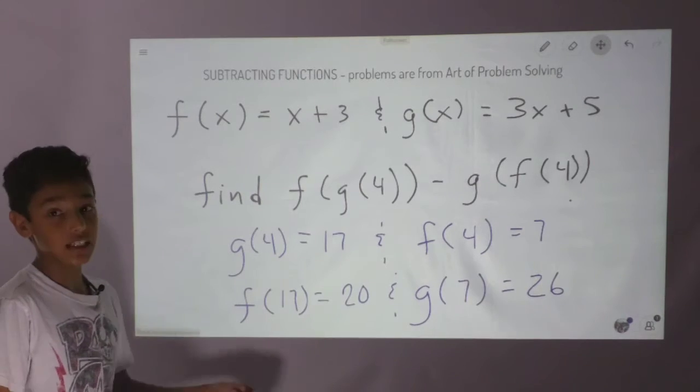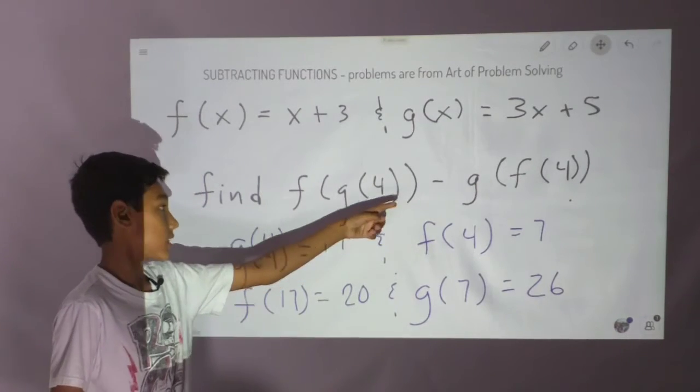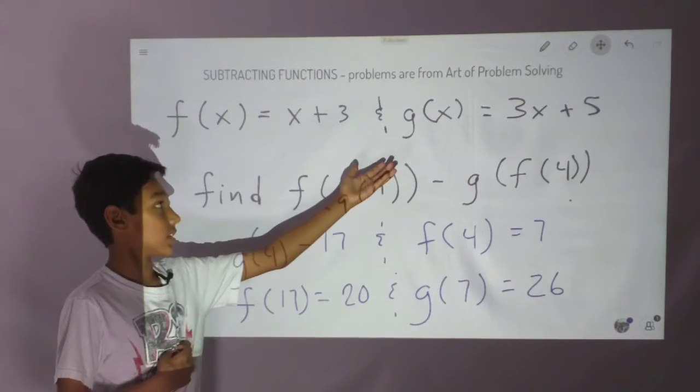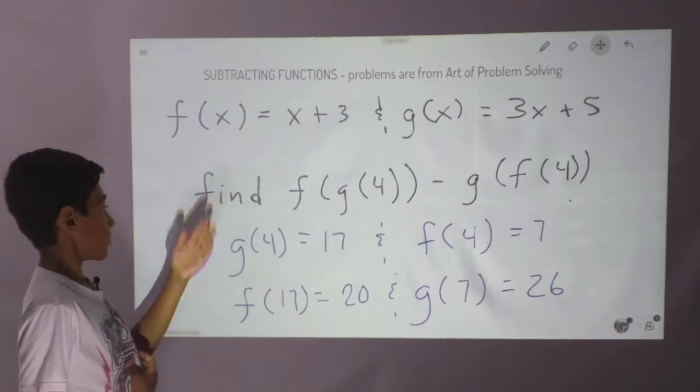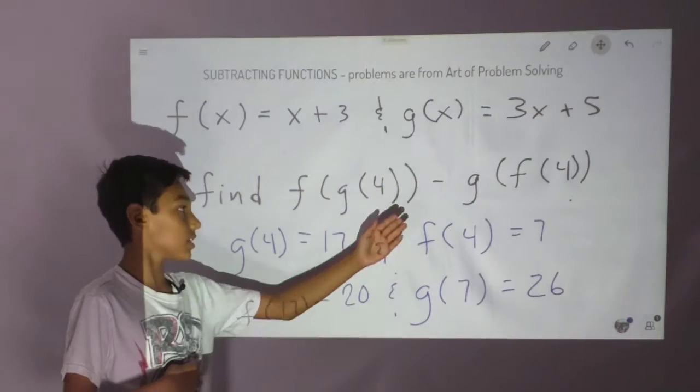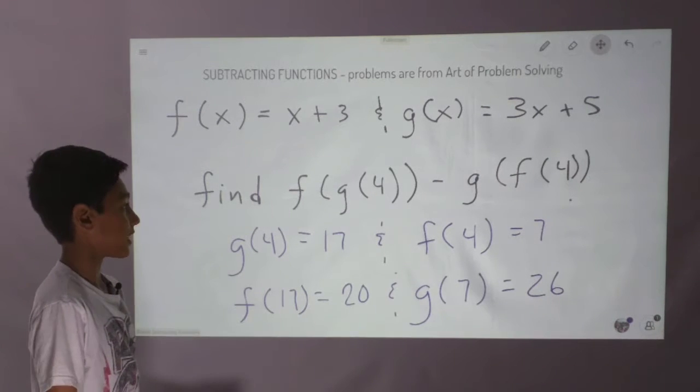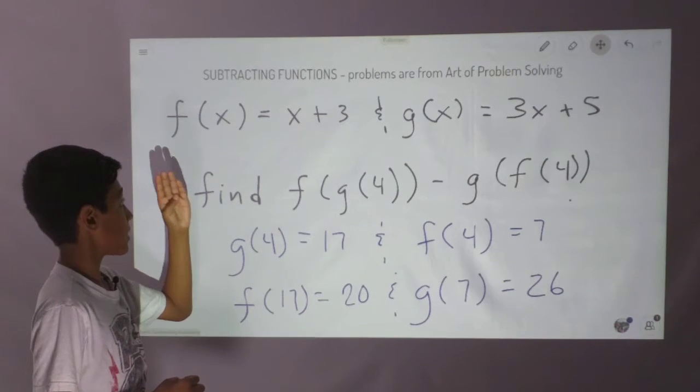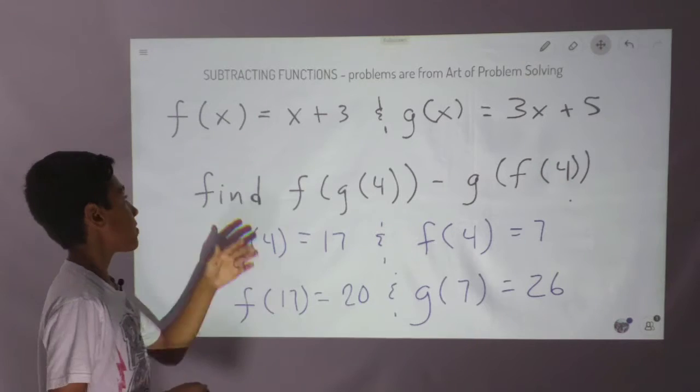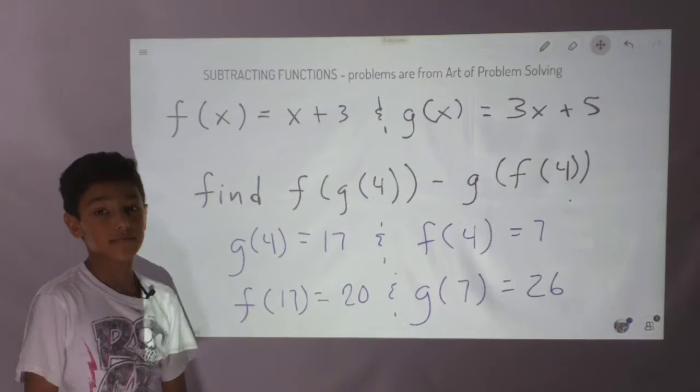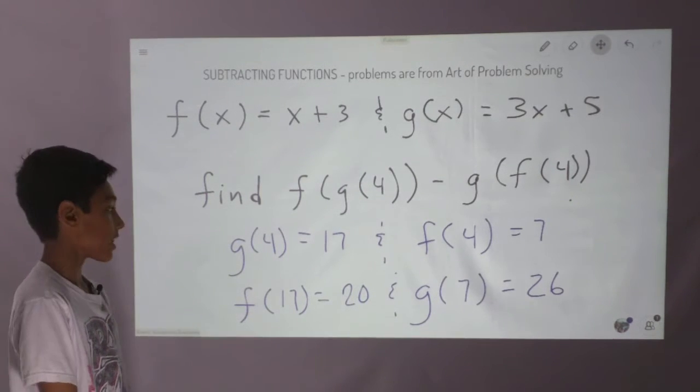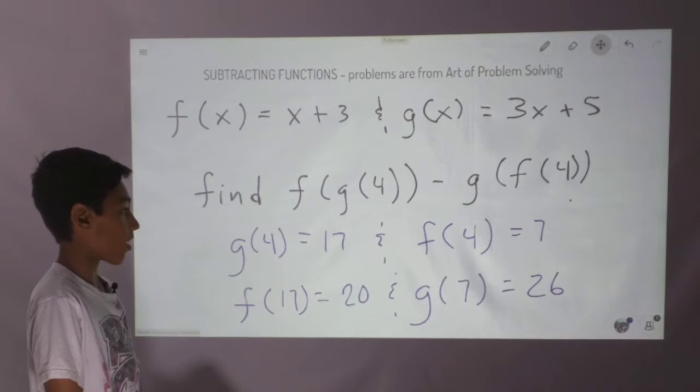So we did that, and then we did the same thing with this. So f of 4, we find out what that is, replace 4 with x, and then we plug it into g. And then we got these answers 17 and 7.